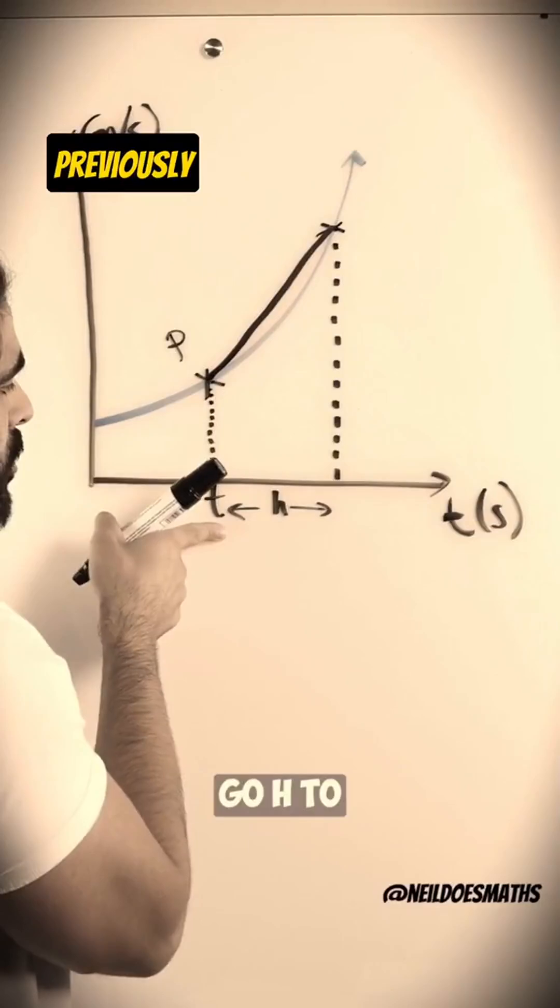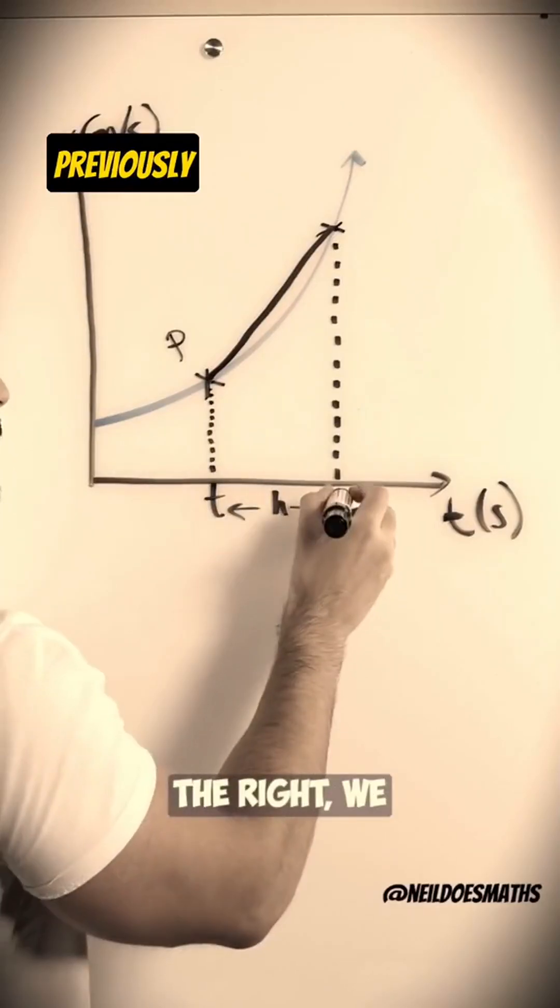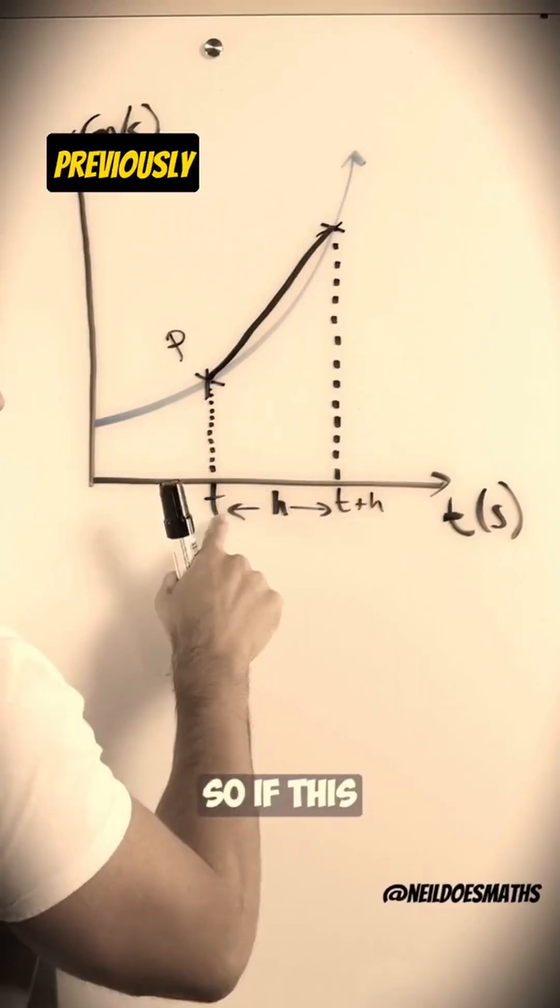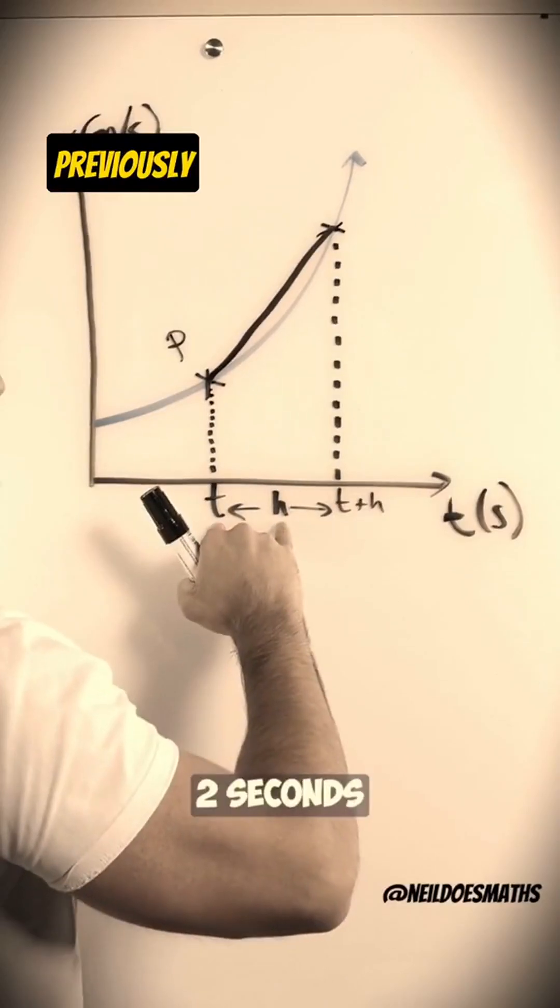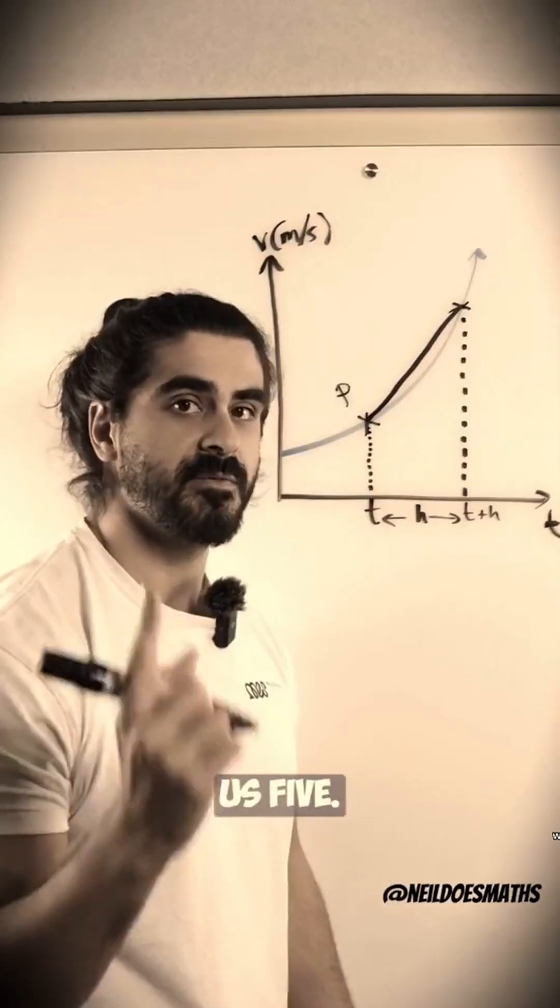At some specific time, if we go h to the right, we would just be adding h. So if this is 3 seconds and we go 2 seconds across, we would just do 3 plus 2 to give us 5.